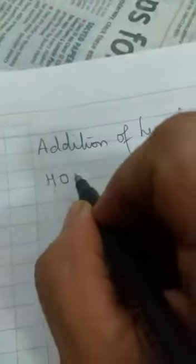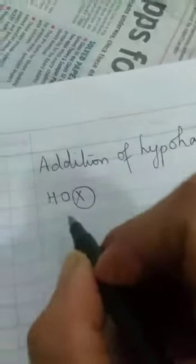Abhi hypohalous kya hota hai? It is OH and X. Okay. So, halogen and hydroxy groups. So, this is known as hypohalous acid.